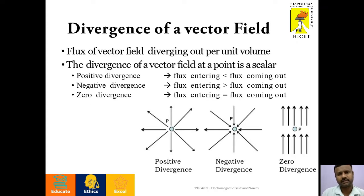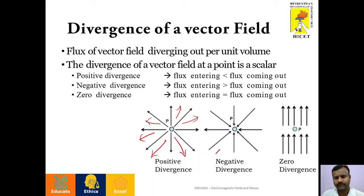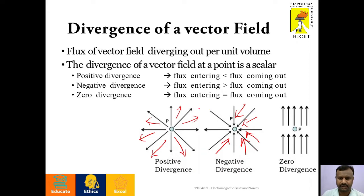The divergence of a vector field is the amount of flux diverging out per unit volume. The divergence of a vector can be a positive divergence, negative divergence, or zero divergence. If the amount of flux coming out of the vector field is greater than the flux getting into that vector field, then it is positive divergence. Negative divergence is if the amount of flux entering into that vector field is greater. If the flux entering and coming out of the vector field are equal, then we have zero divergence. Usually the divergence of any vector field is a scalar measure.